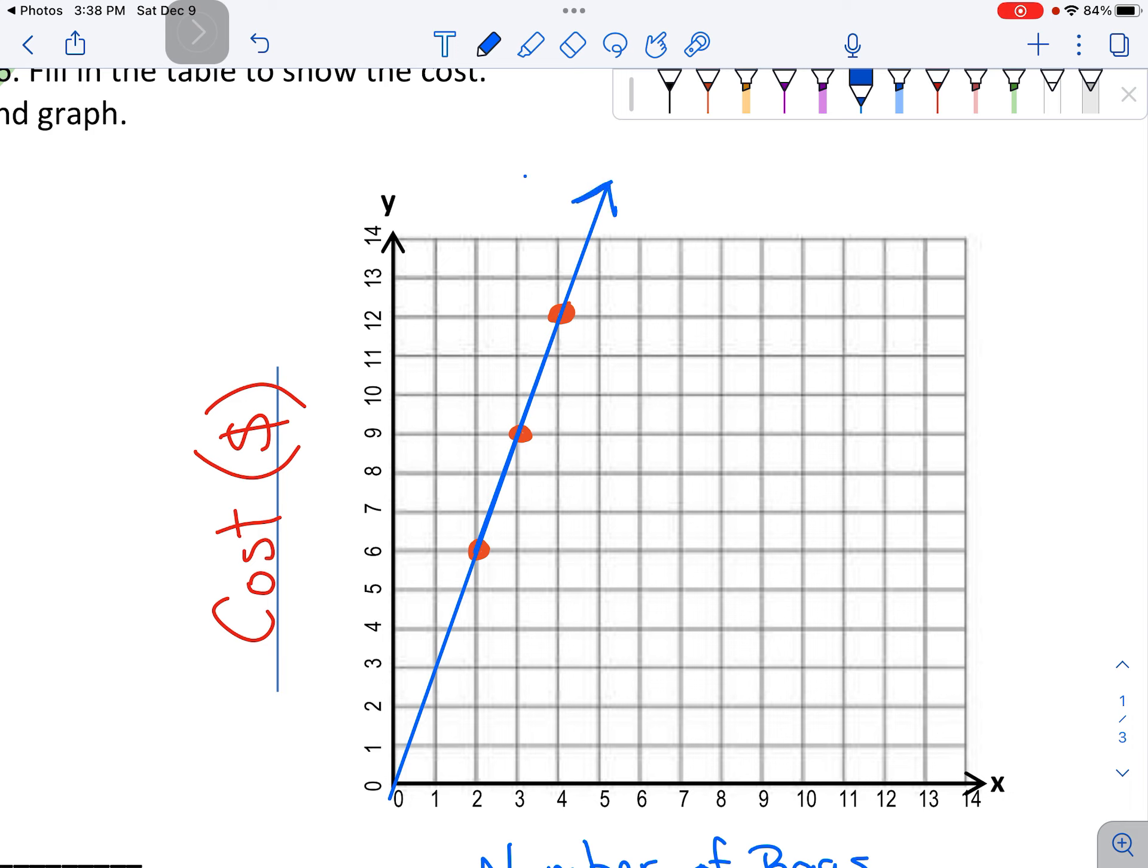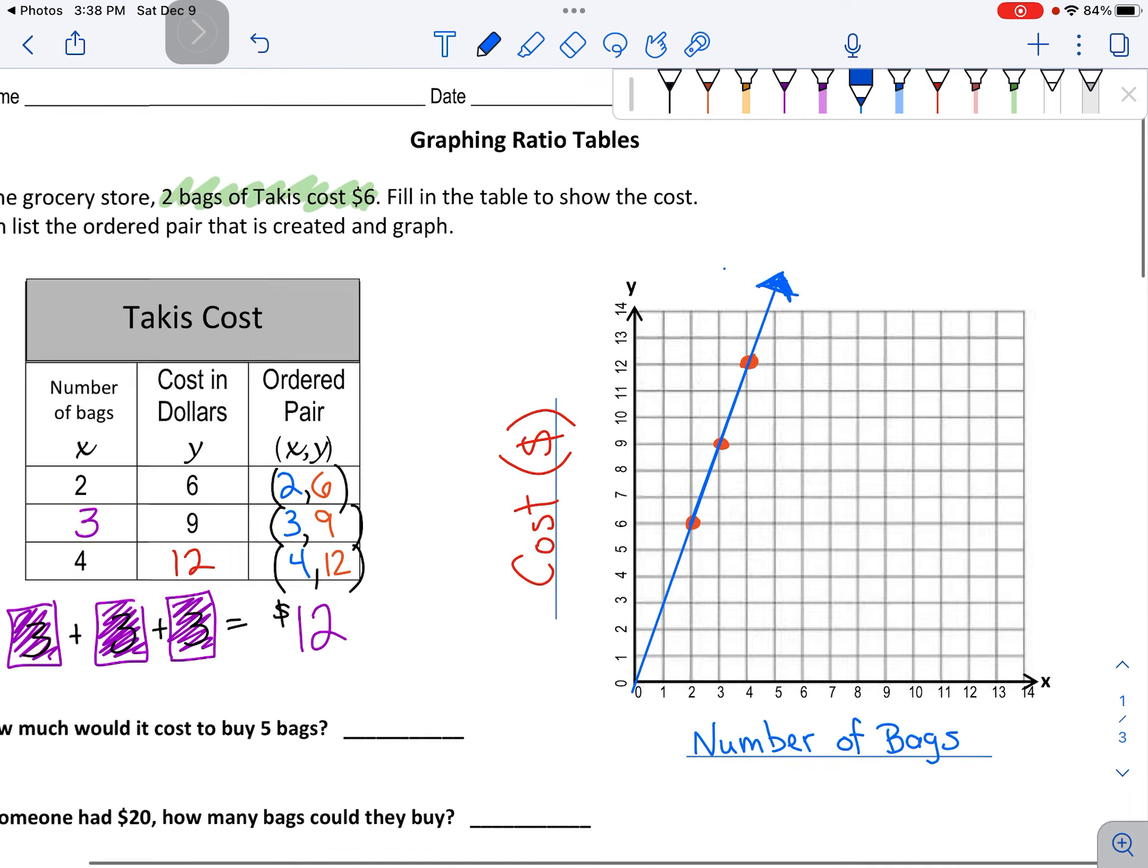Here is a graph of that ratio. It goes off the grid. See how I drew that arrow? Because you could buy more than 14 bags if you wanted to, and it would cost more than $14.